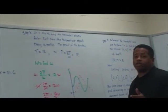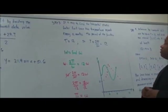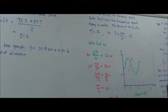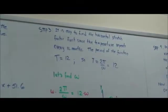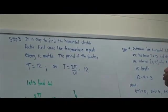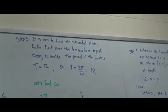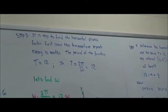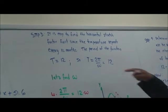If we go to step 3, it is easy to find the horizontal stretch factor, because first, you know, since the temperature repeats every 12 months, and the period of the function, let's find the period, that's going to be t is equal to 12. So, t is equal to 12, or 2 pi over omega, which is 12.